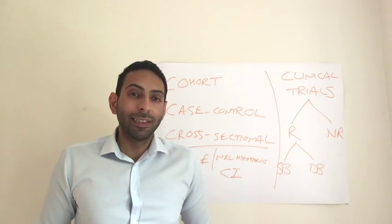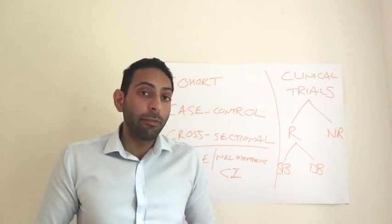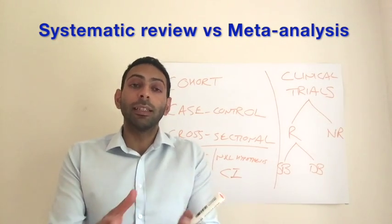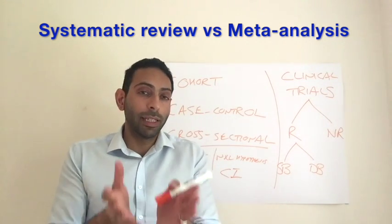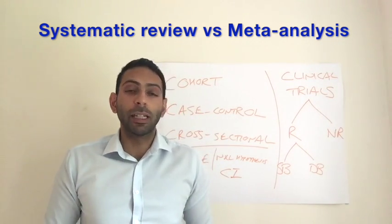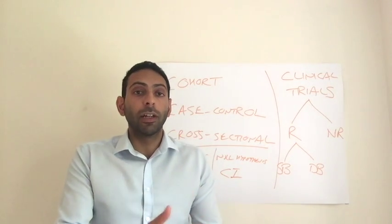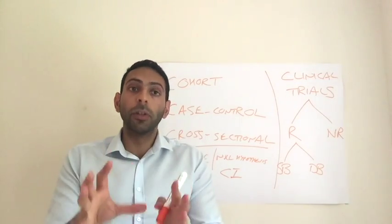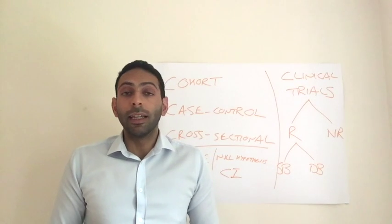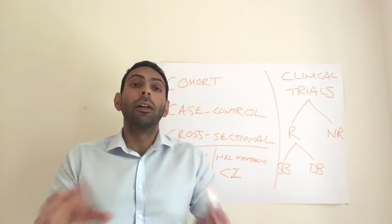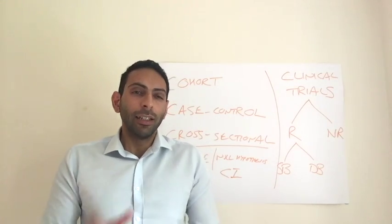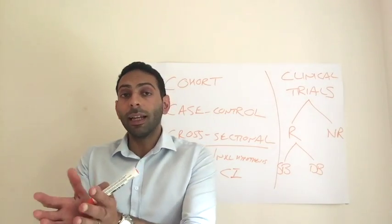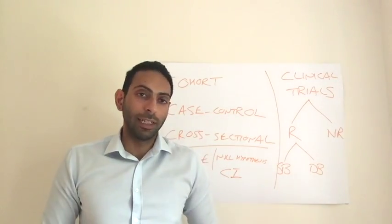Before moving away from trial studies, just a couple of things to mention: the difference between a systematic review and a meta-analysis. A systematic review is a review of all trials covering a particular area of interest - for example, all trials on a particular drug and its effect on hypertension - and it's not always statistically analysed. Whereas a meta-analysis is a quantitative or statistical review of all the data available for a particular area, getting the numbers out and looking at them in a more quantitative way.